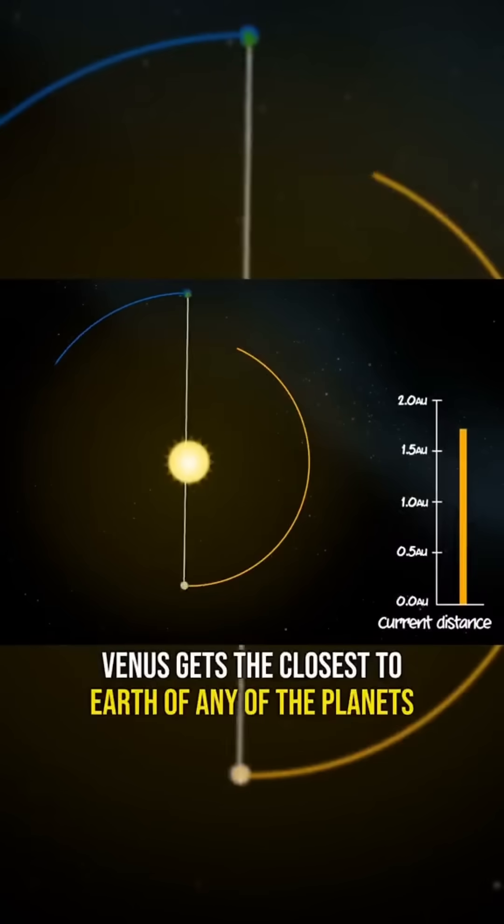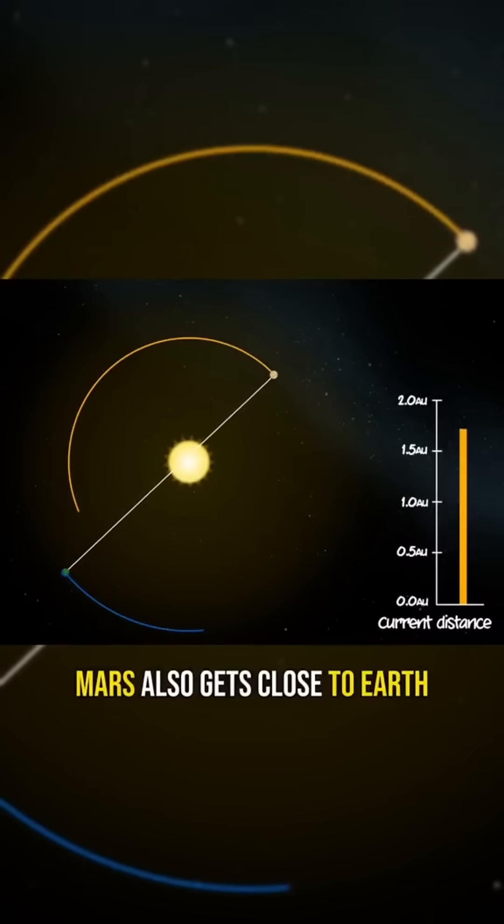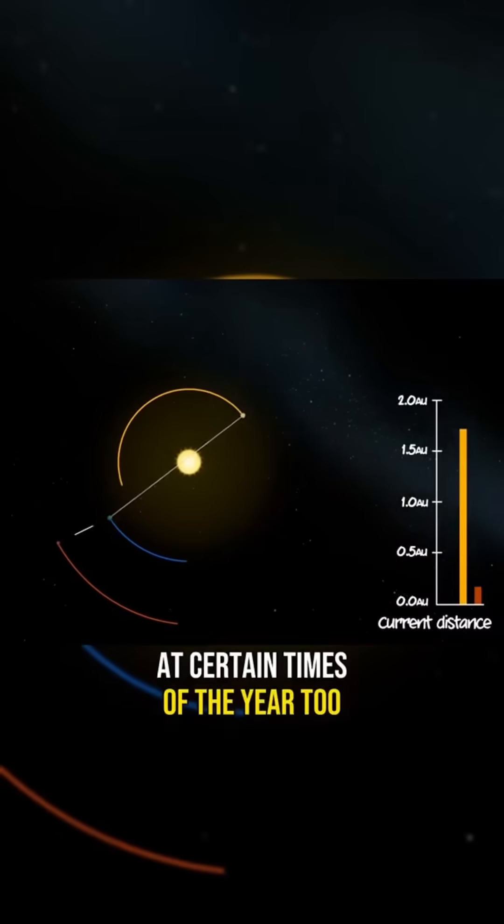Venus gets the closest to Earth of any of the planets, but only once every one and a half years. Mars also gets close to Earth at certain times of the year too.